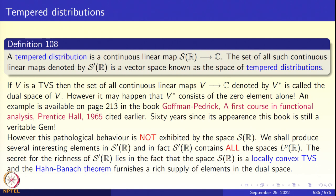Continuity here refers to the topology we defined on S(R). When does fn converge to f in the Schwartz space? It is a very strong notion of convergence, and continuity is in this strong sense. The set of all such continuous linear maps is denoted S'(R). In functional analysis, when V is a topological vector space, V' (or V*) denotes the dual space. So tempered distributions are the dual of S(R), denoted S'(R), and S'(R) is itself a vector space.